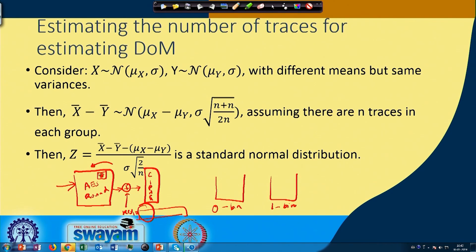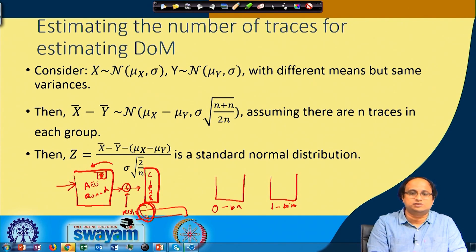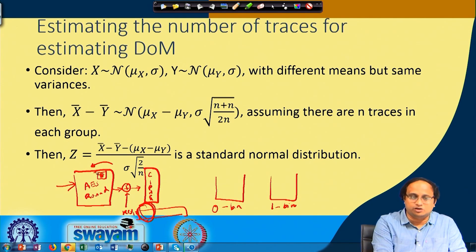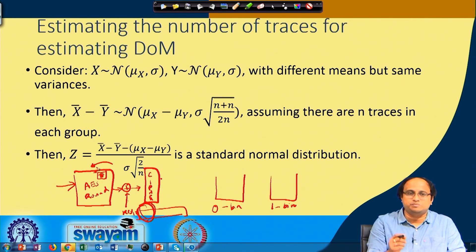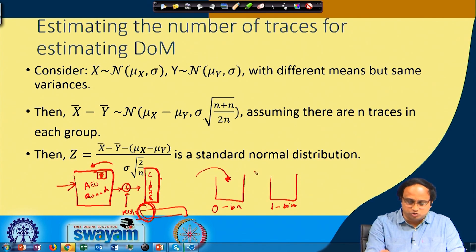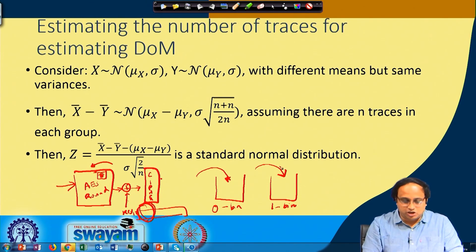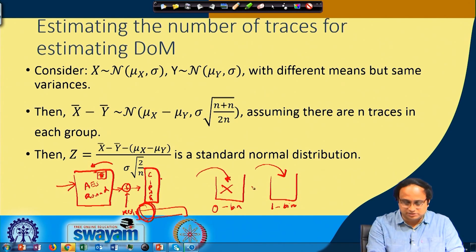You invert this S-box going to a specific bit, and depending on your guess for the key byte — whether you get a 0 or 1 value from the ciphertext — you take the ciphertext, XOR with the key, apply the inverse S-box, and go to the target bit. Depending on whether the target bit is 0 or 1, you put the power trace into the 0 bin or the 1 bin. Now we have two statistical distributions.